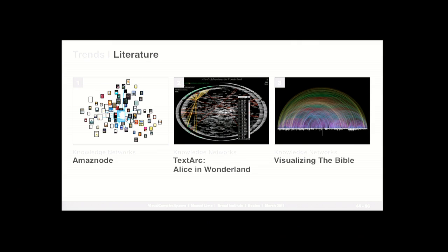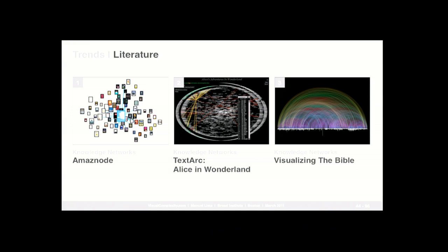There's a lot of different trends — literature is another. Amazon is trying to map the 'people who bought this also bought that' engine. But then you have much richer initiatives: Text Arc is actually trying to map all the interconnections within Alice in Wonderland and all the different words used in that vast text. And then you have Visualizing the Bible, which maps all the different cross-references — every time a person is cross-referenced, it creates an arc — showing the key figures that appear from the very beginning to the very end of the Bible.